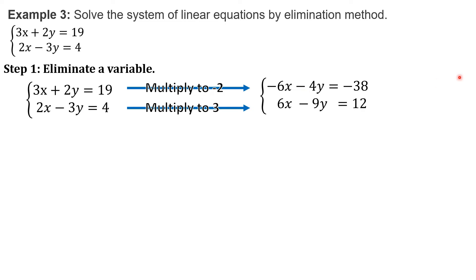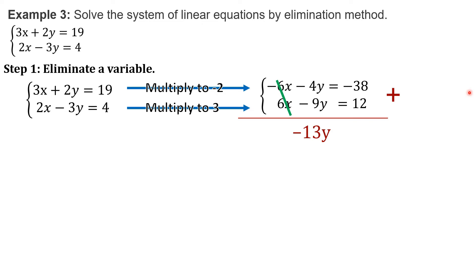Now, as you can see, the coefficients of variable x are the same and they have different signs. We may now proceed in adding them. Negative 6x plus positive 6x will be cancelled since it gives 0. Negative 4y plus negative 9y will give us negative 13y. And negative 38 plus 12, copying the sign of the larger number, will give us negative 26.